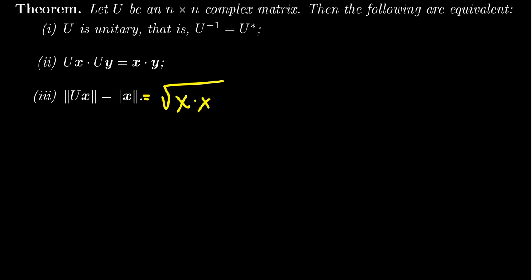Now of course, if you square both sides, this is just going to be x dot x. And so assuming that the length of Ux equals the length of x is the same thing as assuming the length of Ux squared is equal to the length of x squared. So we're going to also use that second condition more often here.